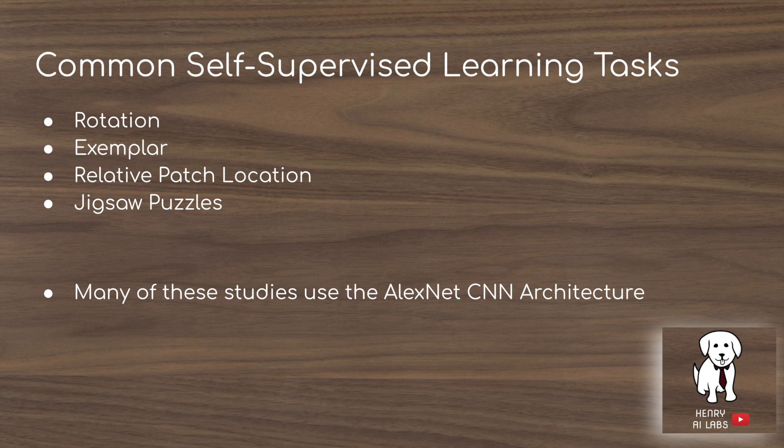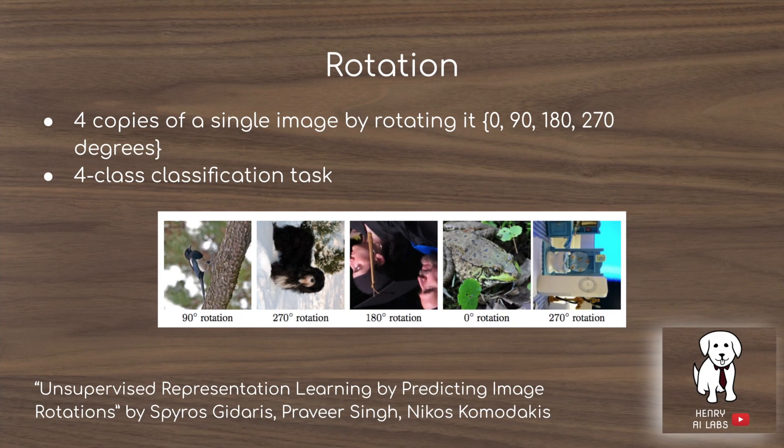Many existing studies on this topic use the AlexNet CNN architecture. This paper from Google AI uses state-of-the-art ResNet designs like the Wide ResNet and the Reversible ResNet, which is a more efficient implementation. The rotation task works by taking images and rotating them either 0, 90, 180, or 270 degrees, and the network performs a four-class classification task for these different rotations.